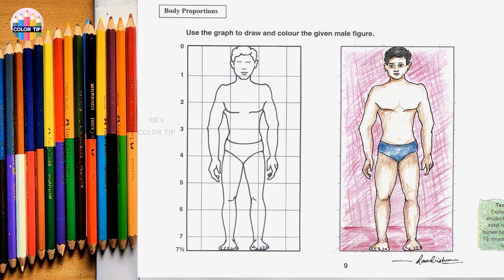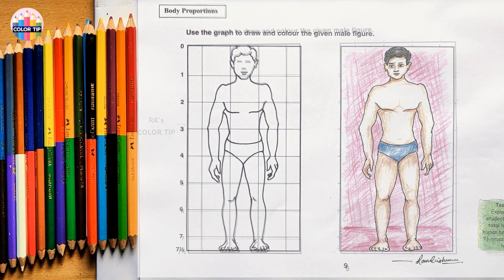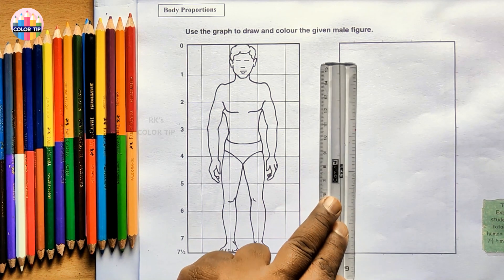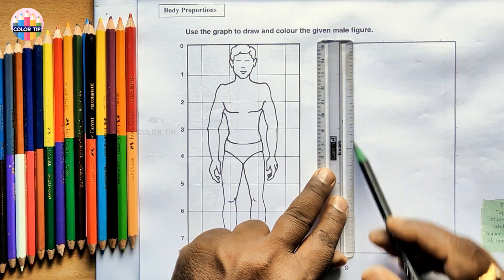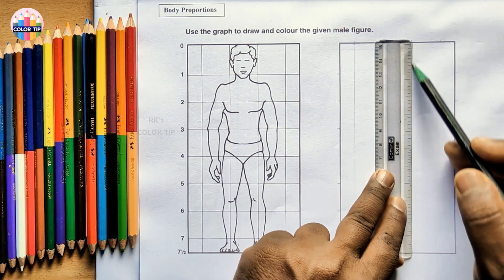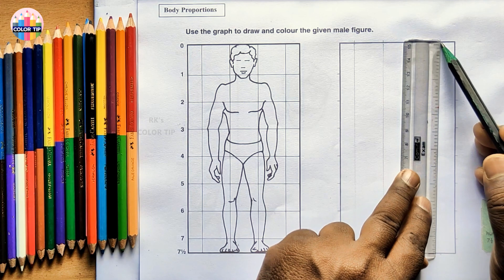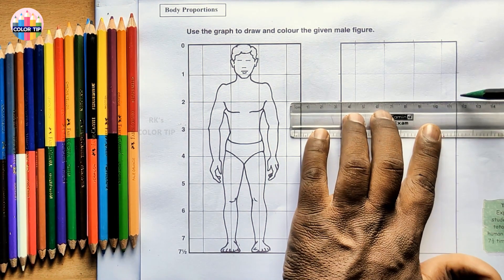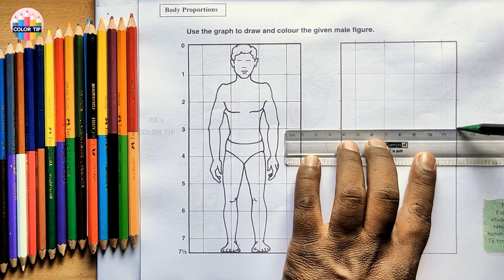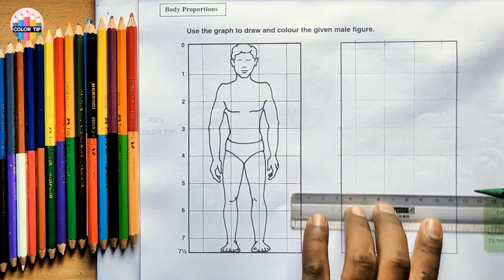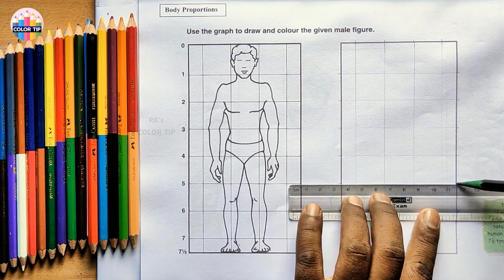Step-by-step, level 6, topic number 9: body proportions. Use the graph to draw and color the given male figure. Draw the grid as light as possible — we have to erase the grid after making the picture, so it must be very light.